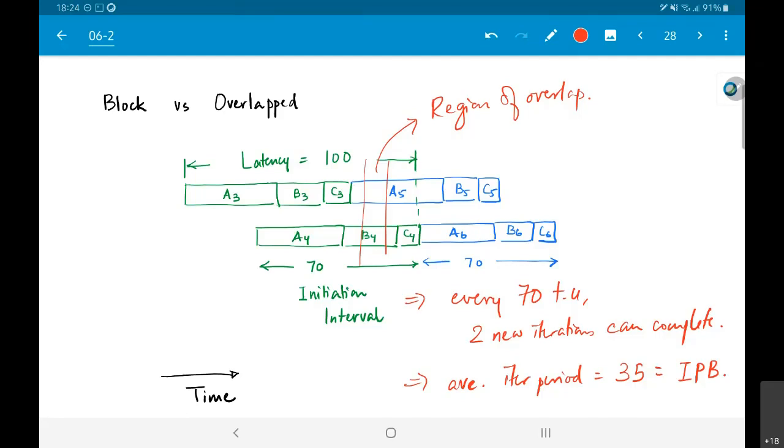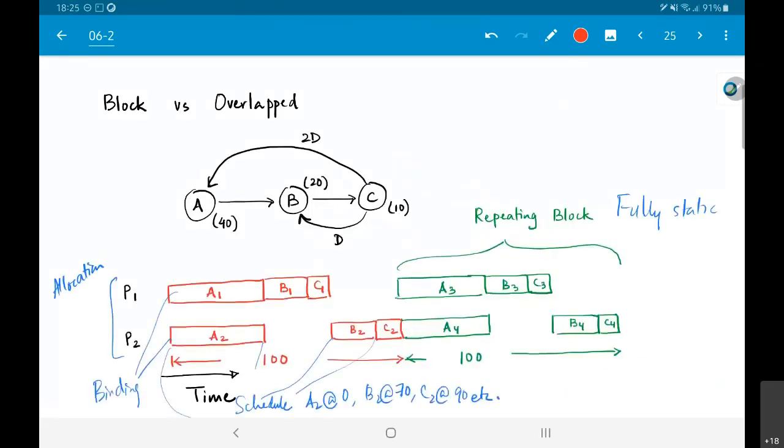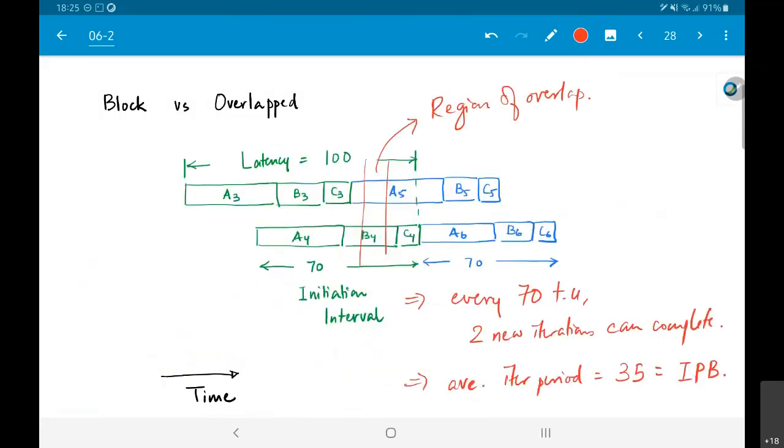Now, the question is, was an overlap schedule the only way by which I could have got to this iteration period bound of 70? Because clearly what you can see over here is that if I stuck with a block schedule, I could only get an average iteration period of 50 time units, not 35. The question is could I have done something to improve that, could I have made a better block schedule? In this particular case the answer is yes.